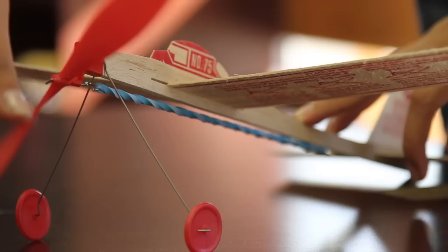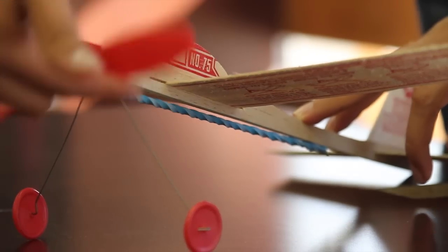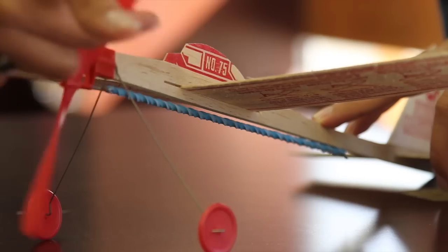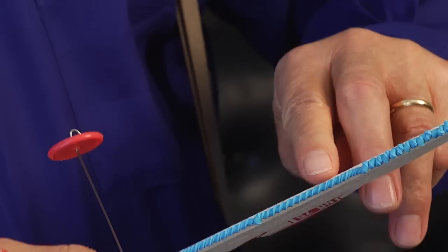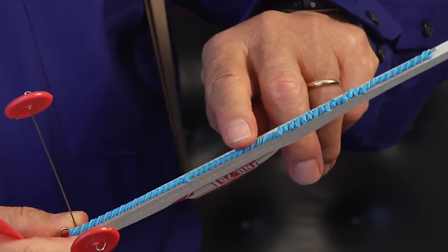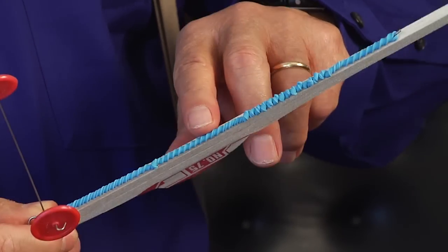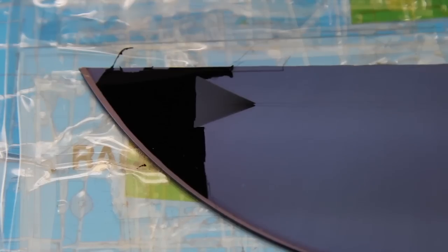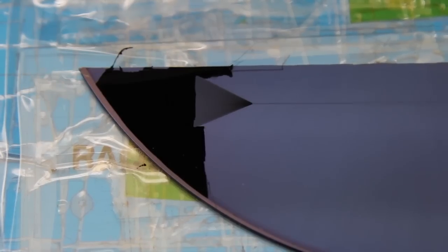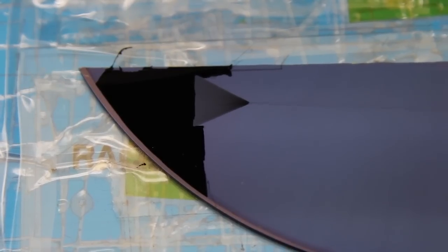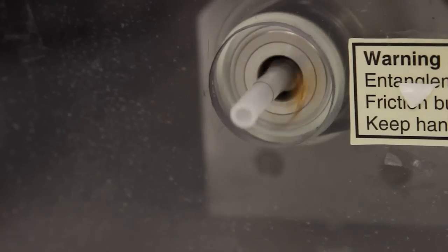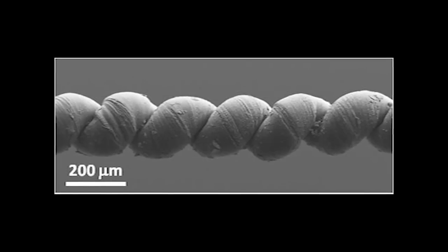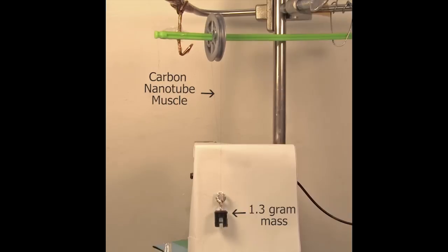If I wind up the rubber band on this model aircraft, this is a twisted part of the rubber yarn and this is the coiled part. This coiling is extremely important in obtaining very high actuation for our yarn.